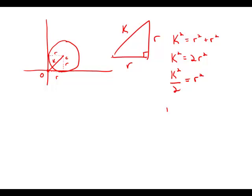Take a square root of both sides. And we get R equals the square root of K squared over 2. We can separate the square root by division, and what we get is K over the square root of 2.